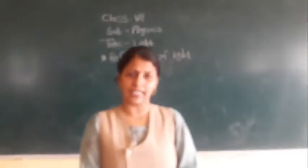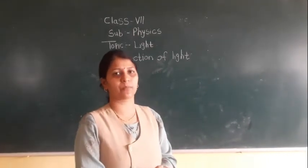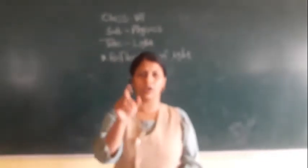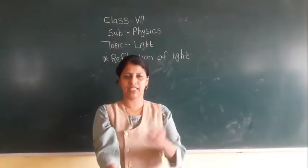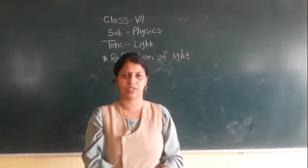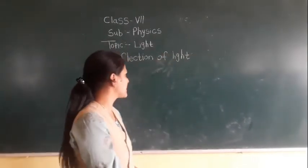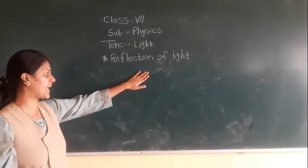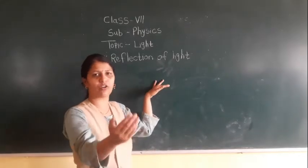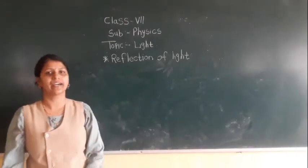So, the reflection of light — it is nothing but the image. Suppose if I throw a ball on a wall, it will get reflected back. After striking the wall, the ball comes back to me. So that is nothing but reflection. Reflection of light means the bouncing back of light. That is called reflection of light.